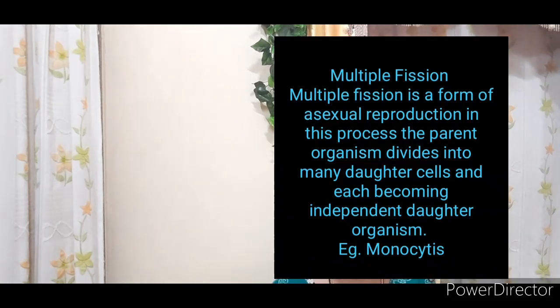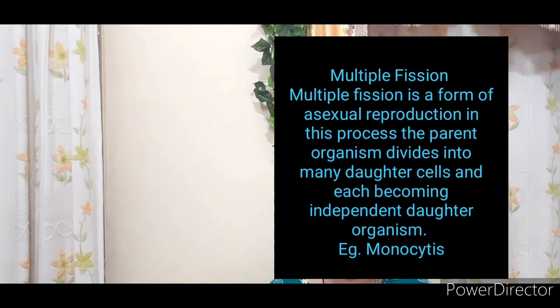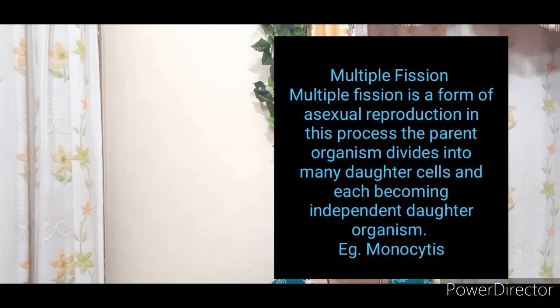Multiple fission is also a form of asexual reproduction. In this process, the parental organism divides into many daughter cells and each one becomes an independent daughter organism — it divides into many halves and each half forms a new individual. Examples are monocystis and amoeba.